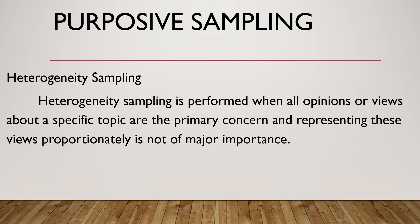Heterogeneity sampling is similar to stratified sampling; however, heterogeneity sampling is not particular about proportion. For example, if there are five groups and the population from each group is not equal, the samples we take from each group do not necessarily have to be equal and proportional. Proportionality is not of major importance in heterogeneity sampling.